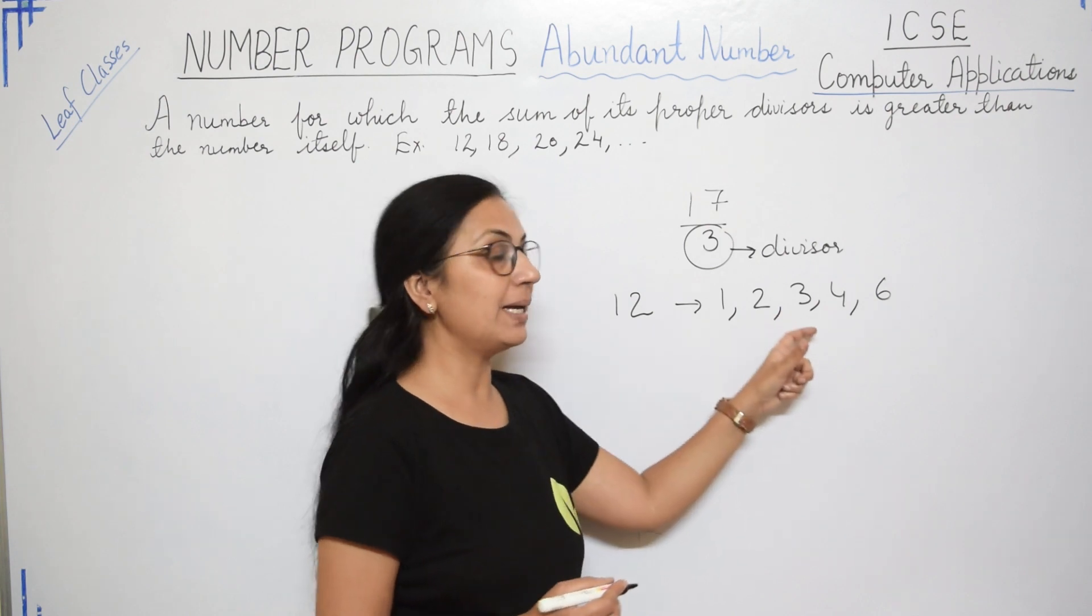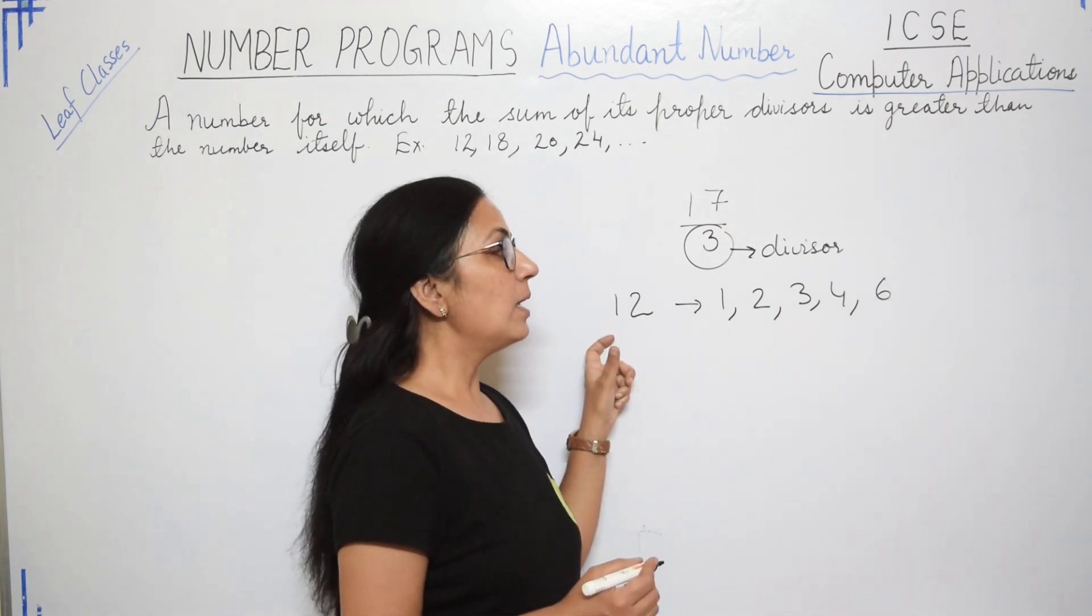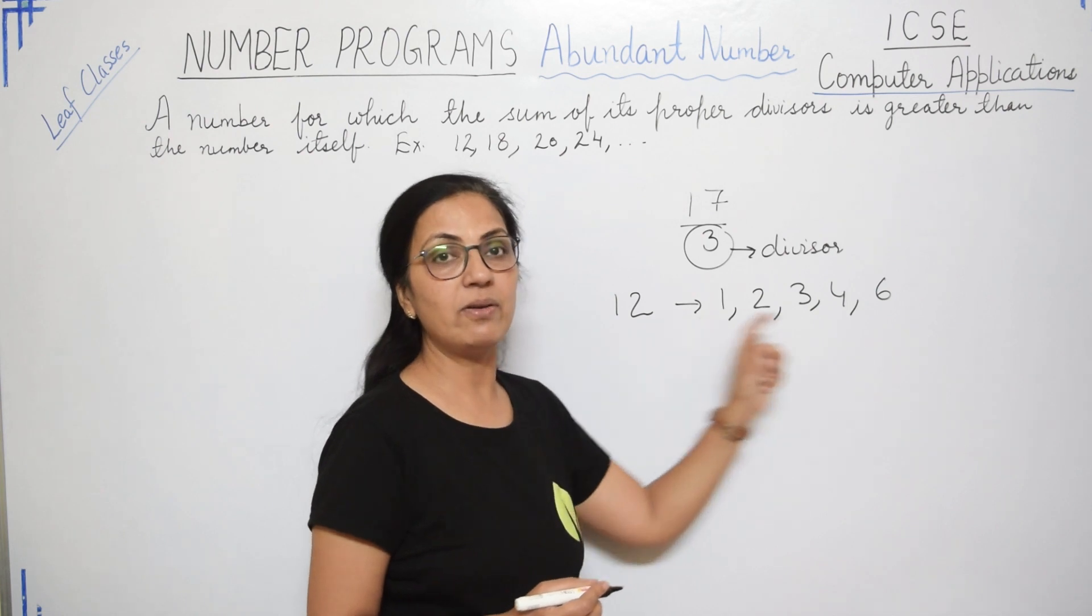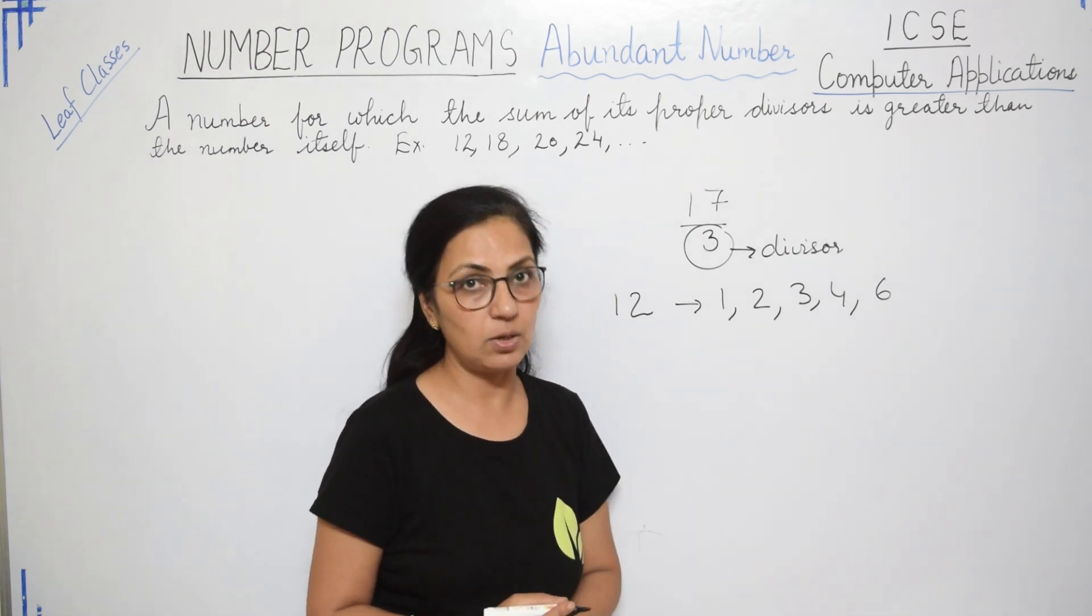12 divided by 3, remainder is 0. 12 divided by 4, remainder is 0. 12 divided by 6, remainder is 0. Right?